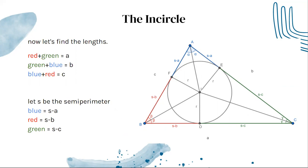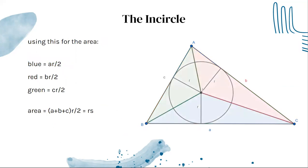Just keep this in your memory because we'll use it later. Now let's relate this stuff to the area. The blue area here has a base of A and a height of R, so its area is AR/2. The red is BR/2, and the green is CR/2. So in total, the area is (A + B + C)R/2, which is just RS.